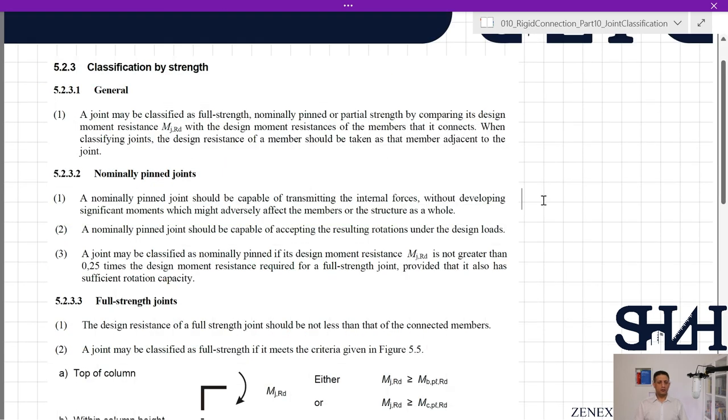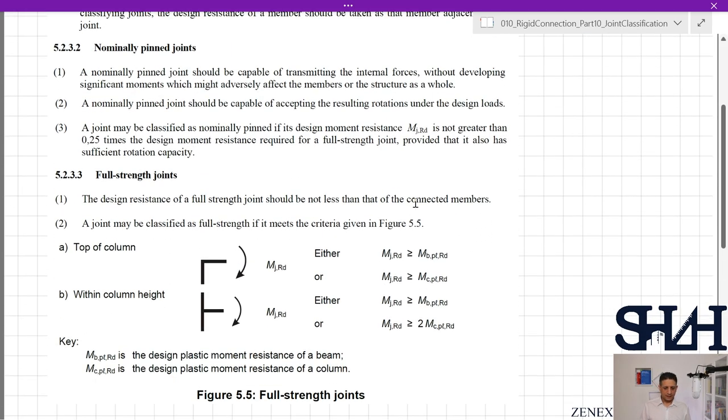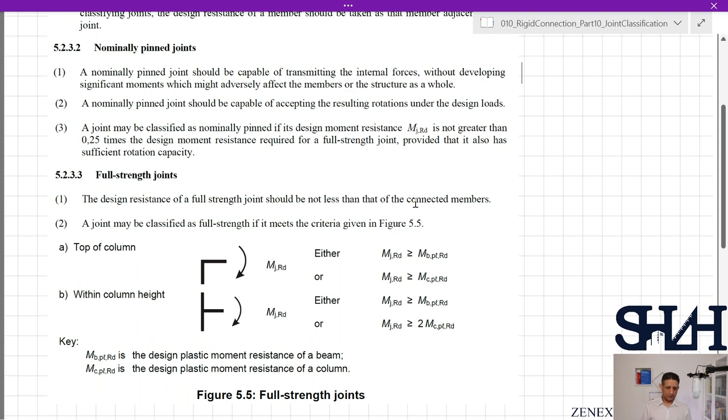The other clause in Eurocode is 5.2.3.1: classification by strength. Nominally pinned joints are explained here. Full strength joints are also explained here. If our case is not in these two categories in terms of strength categorization, it will be considered as a semi-strength joint or semi-rigid joint.